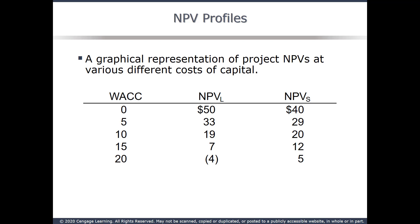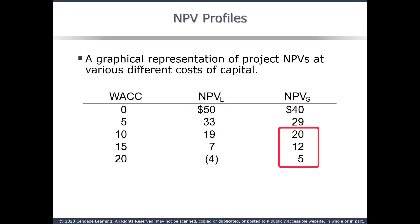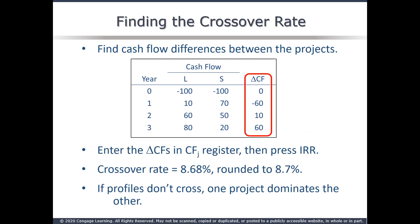Still using our two sample projects, L and S, the table shows the NPVs for both projects at varying cost of capital values. At low rates, Project L dominates. At higher rates, Project S dominates. The crossover rate is the discount rate where the NPV of the two cash flow streams are the same.